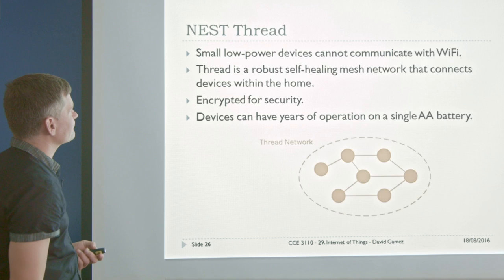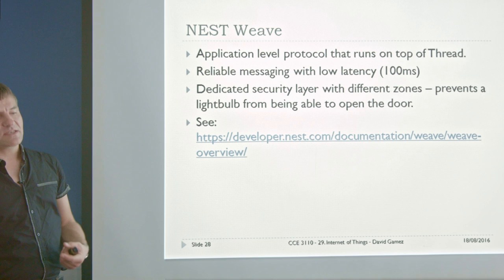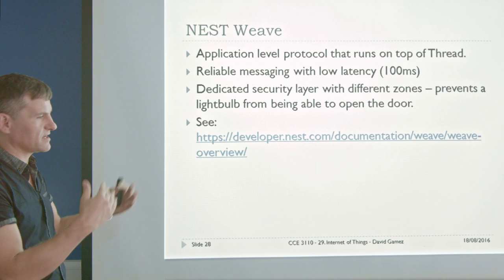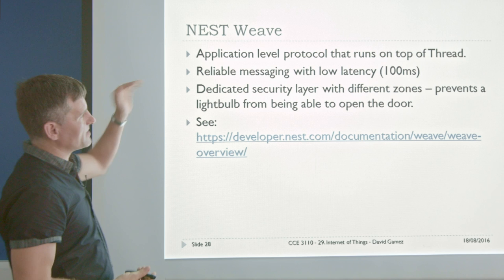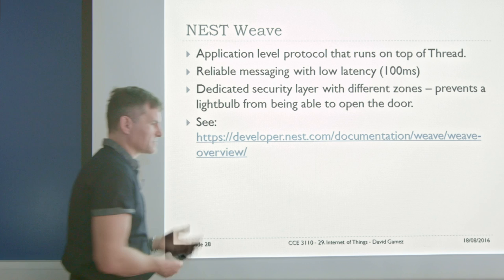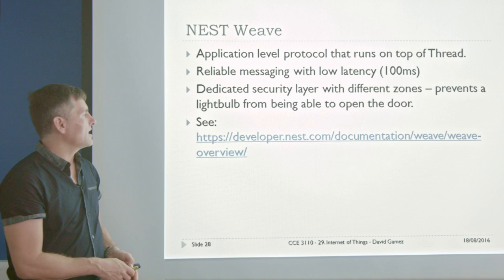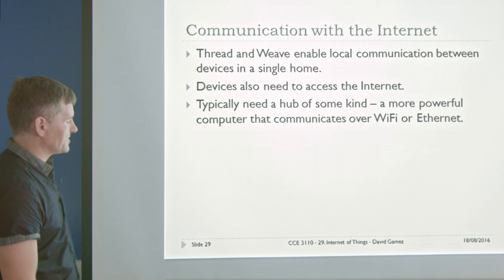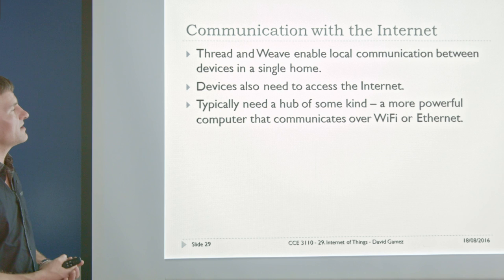Things like Z-Wave, ZigBee, and WeMo are competitors, but Nest Thread is a more modern alternative. There's an article on the class website comparing all the differences. Then we've got Weave, which is an application-layer protocol that sits on top of Thread. It enables you to send messages between devices in the home with low latency — around 100 milliseconds — and has security layers with different zones, so if you hack into the light bulb, you can't open the door. Thread and Weave together handle how devices talk within the home.